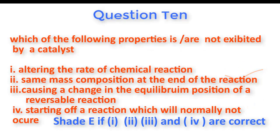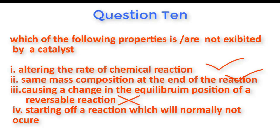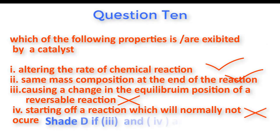Question number ten: Which of the following properties are not exhibited by catalysts? Options three and four are the things that catalysts will not do. Catalysts do not change the equilibrium position of a reversible reaction, and catalysts do not have the power to start up a reaction that will not normally occur. So the correct options are three and four, and the right answer is D.